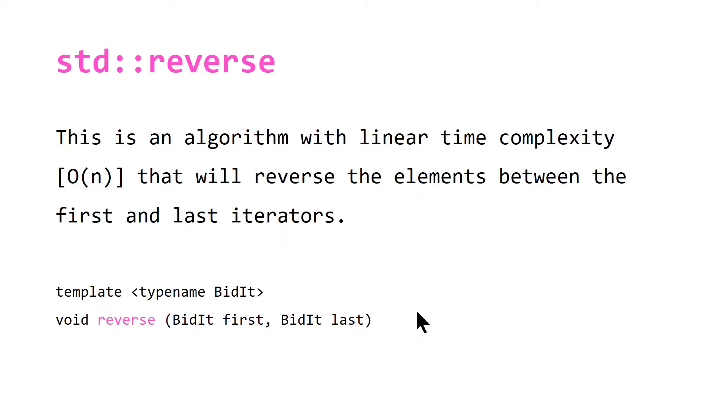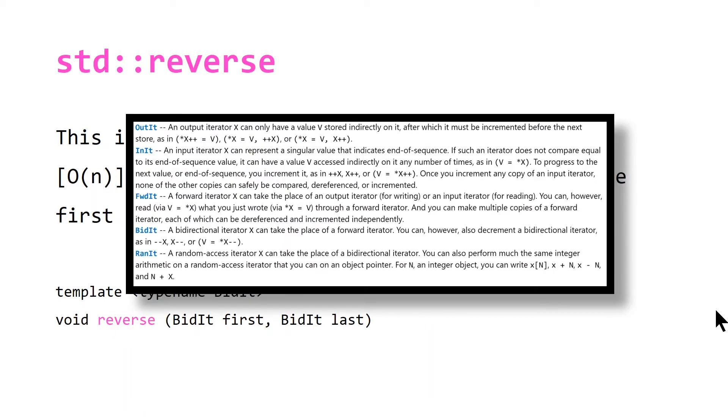Here we have the declaration of the function or the algorithm. Note that BidIt is short for bi-directional iterators. I'm using the Microsoft convention which is OutIt, InIt, FwdIt, BidIt, and RanIt for the five different iterators.